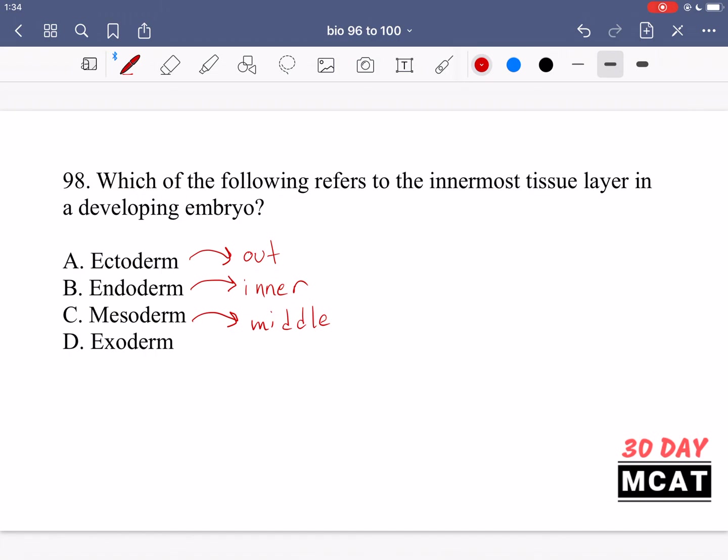Ectoderm on the outside. So this is the order of them and we're asked which one is the innermost tissue layer. That would be the endoderm. An exoderm is not even an answer. It's not even something that exists in regards to tissue layers so ignore that option.